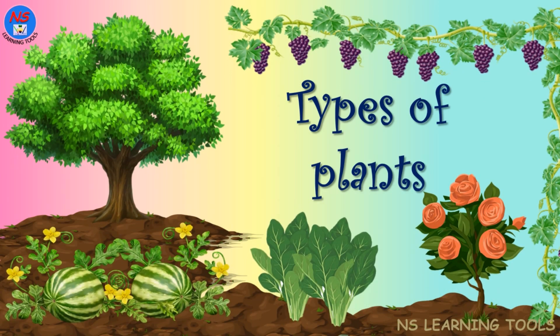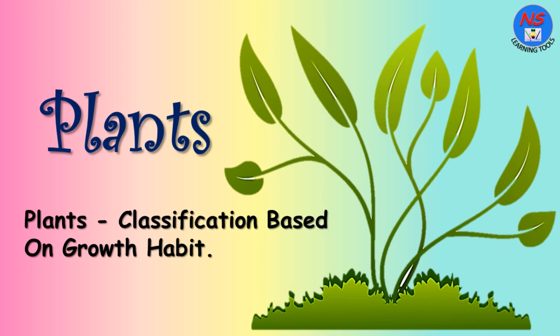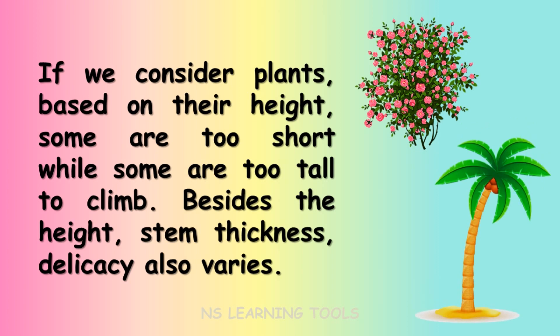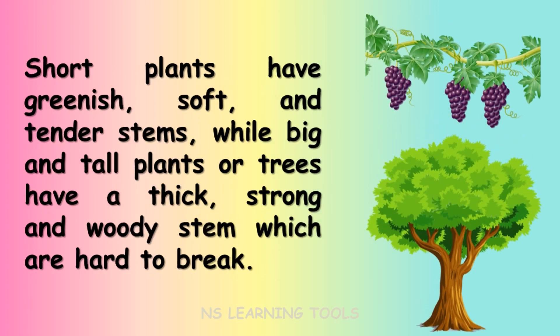In this video we will learn about types of plants. Plants classification is based on growth habit. If we consider plants based on their height, some are too short while some are too tall. Besides height, stem thickness and delicacy also varies. Short plants have greenish, soft and tender stems, while big and tall plants or trees have a thick, strong and woody stem which are hard to break.